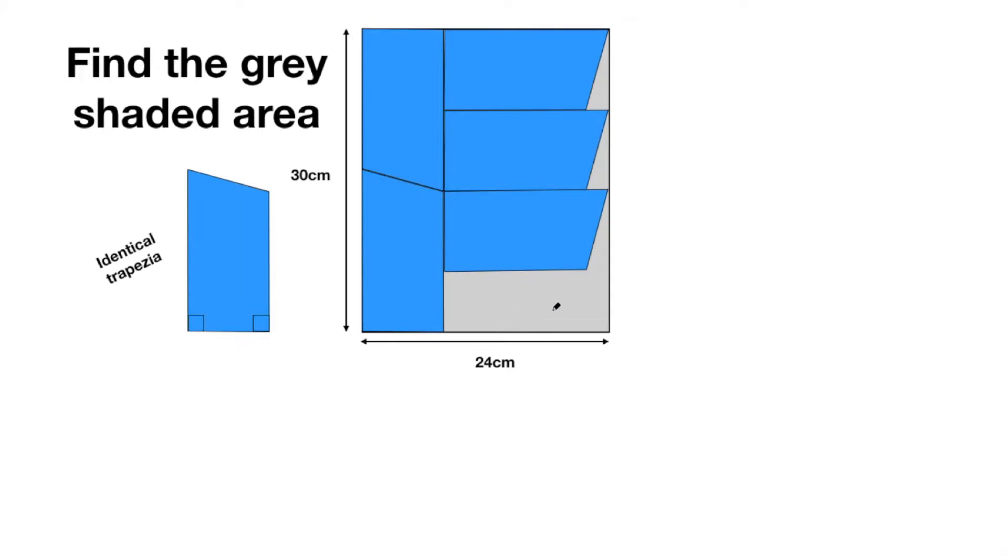So in order to find this gray shaded area we want the total area and we want to subtract the area of these five trapezia. So what's the issue with finding the area of that trapezium is we don't have any of the dimensions on this trapezium. So we need to be able to find the lengths of this trapezium.